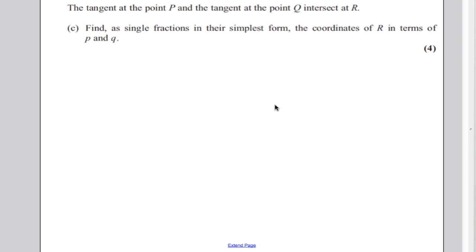Okay, next part, it says the tangent at the point P and the tangent at the point Q intersect at R. Find as single fractions in their simplest form, the coordinates of R in terms of p and q. So let's just, again, just a quick picture to describe what's going on, but we've virtually had this picture before.